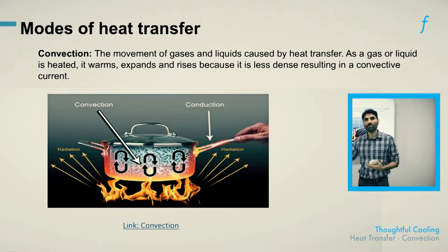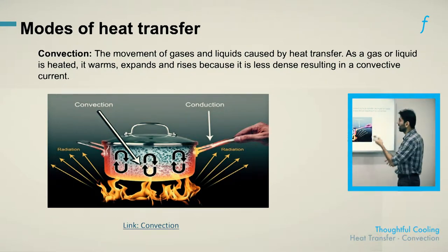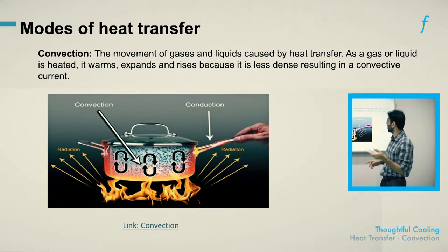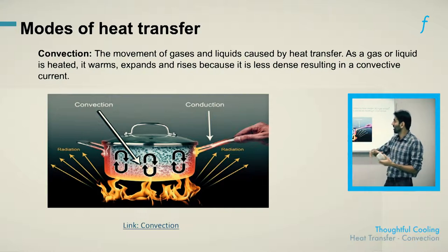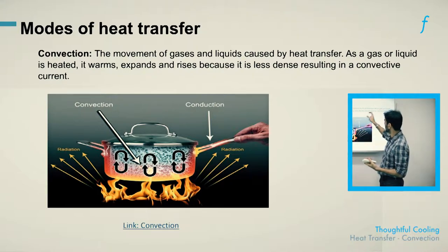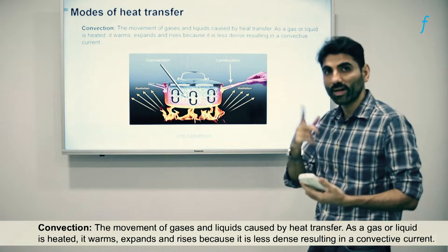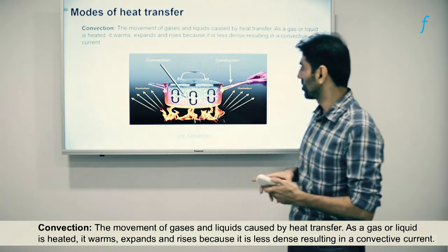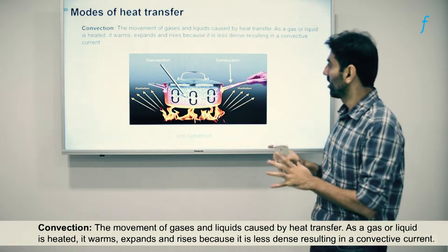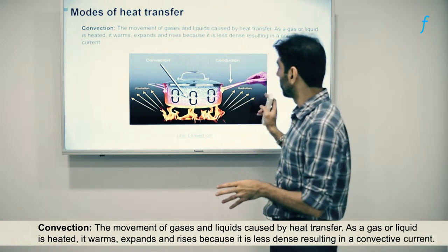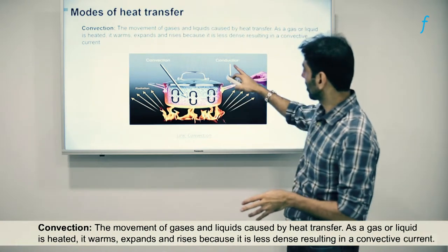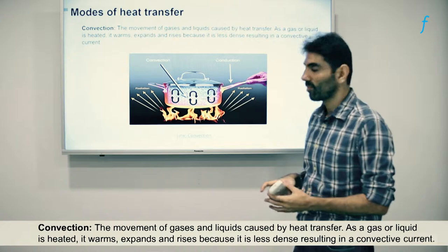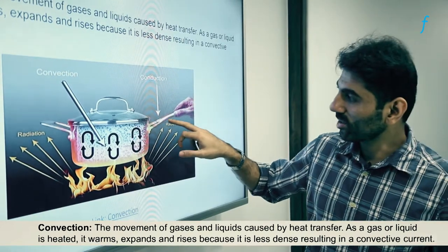In convection, the material itself becomes a carrier of the energy and displaces in the process of conveying the heat. It is a movement of gases and liquids caused by heat transfer. As a gas or liquid is heated, it warms, expands, and rises because it's less dense, resulting in a convective current.